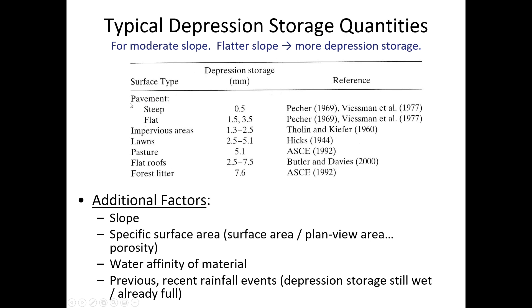Various studies estimate depression storage depths for different surfaces. Steep pavements store about 0.5 millimeters, while flat pavement can store between 1.5 and 3.5 millimeters. Forest litter stores about 7.6 millimeters — significantly more than pavement. The pavement values are differentiated by slope, but the forest litter value isn't. We'd use 7.6 mm for forest litter across all slope categories, knowing that steeper slopes likely reduce depression storage somewhat, as seen with the pavement trend.